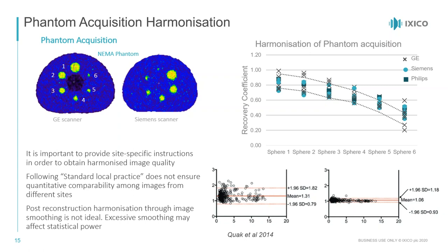Phantom images from sites are checked to confirm acquisition is consistent with requirements, and quantitative recovery coefficients are assessed. Scanner parameters can then be tuned to ensure consistency across sites regardless of manufacturer, narrowing variance through careful harmonization.